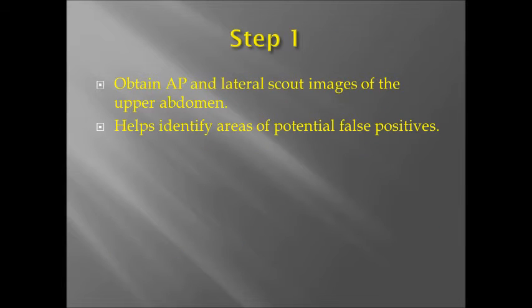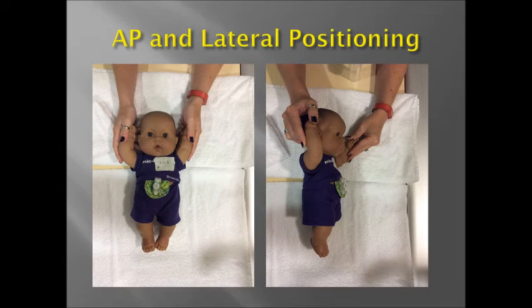Step 1: Obtain AP and lateral scout images of the upper abdomen to help identify areas of potential false positives during the exam. Here is an example of AP and lateral positioning.